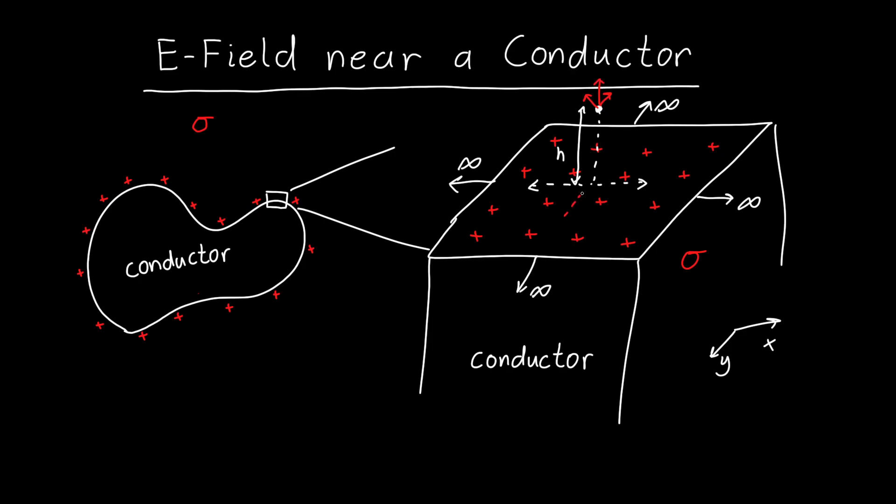And similarly all of the y, all of the electric fields in the y direction from this bit of charge and this bit of charge will cancel with this bit of charge and this bit of charge and this bit of charge. So just like was the case with an infinite sheet our electric field is just going to point straight up. So we have some component ez of the electric field.